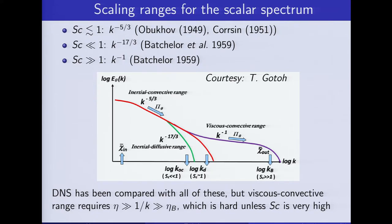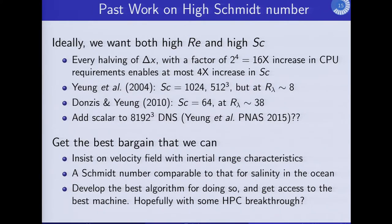To emphasize the difficulty: every time we halve the grid spacing and double the number of grid points, the Courant number restriction means we also have to double the number of time steps. So every time we do that we pay 16 times more in computational resources. And how much increase in Schmidt number do we get? Square root of 16, which is 4. So going from Schmidt number 1 to 512 is a very long way to go.